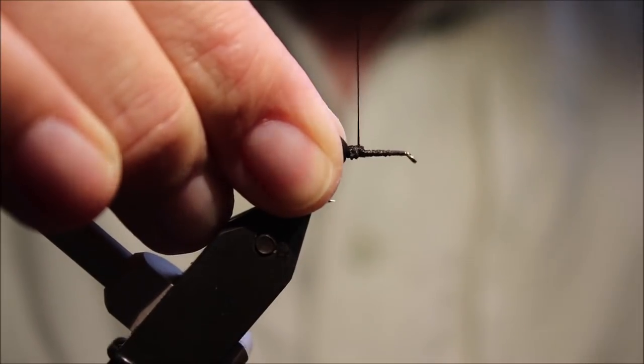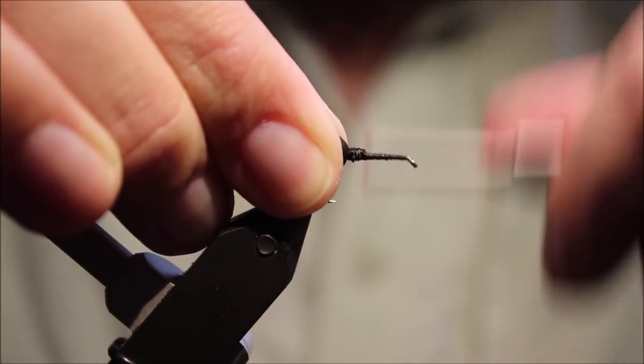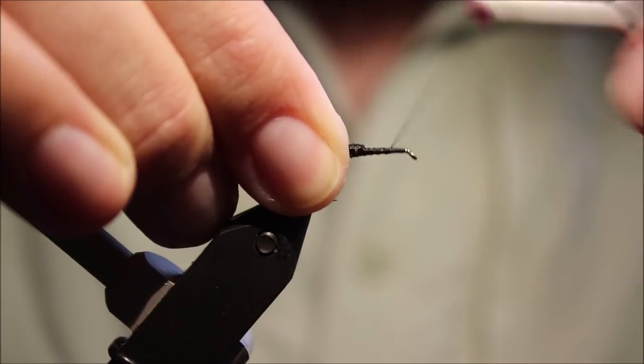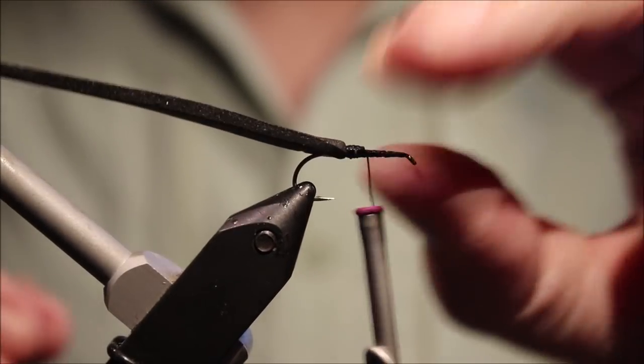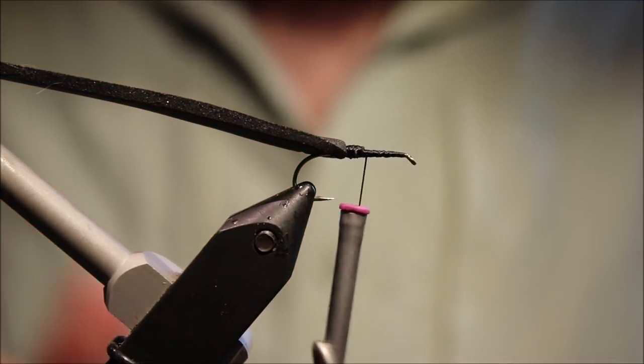I'm going to tidy all of this up just now, bring my thread forward, and then bring it back again. These anchoring wraps of the foam are all just to help prevent twist.